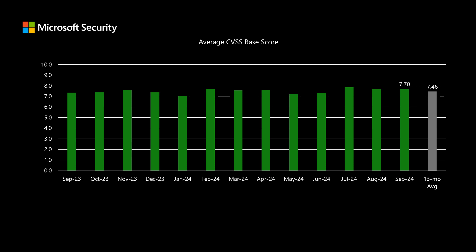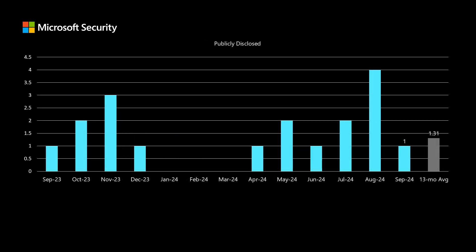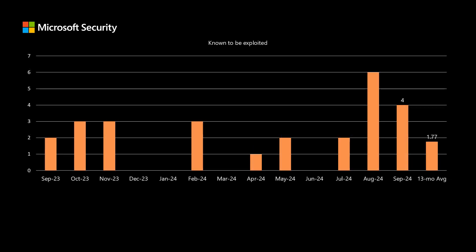Neither is the severity — whether it's critical, important, moderate, or low. And a couple more things not included in the CVSS score: whether it's publicly disclosed — in this case we have one vulnerability that's publicly disclosed in today's set, and we've been averaging just over one at 1.3 for the past 13 months — and whether or not that vulnerability has been known to be exploited out in the wild. This month, we have four vulnerabilities that are known to be exploited prior to release; we've been averaging just under two for the past 13 months. So CVSS is a great starting point, but publicly disclosed and known to be exploited are probably at the top of the list of things that denote risk outside of the CVSS score.